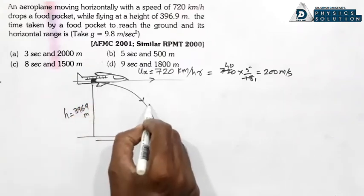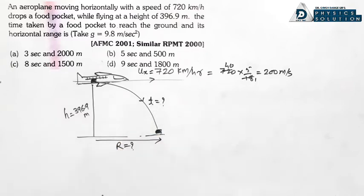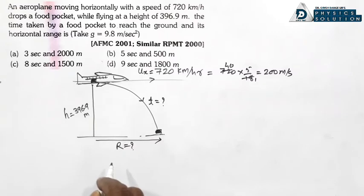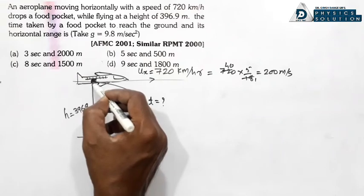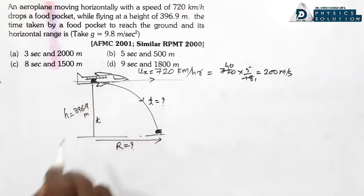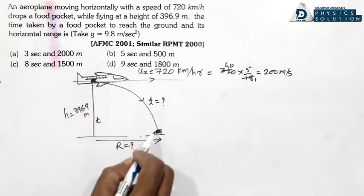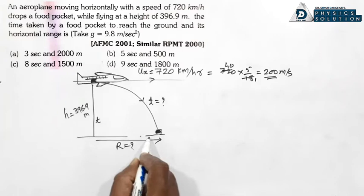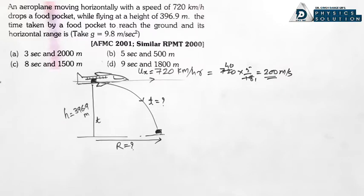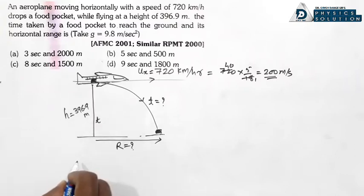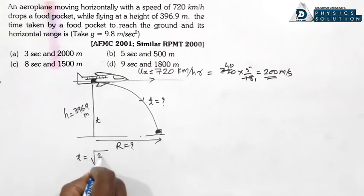Time aur height ki beech relation: t = √(2h/g). Agar object drop hota hai, chahe straight line follow kare ya curved path, dono ke liye time same lagta hai because dono under the action of gravity hote hain.